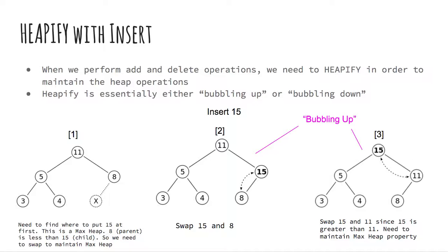Then we compare 15 and 8. We see that 8 the parent is less than 15 the child. So we need to swap to maintain the max heap property. So we swap 15 and 8. We then compare 15 and 11 again. We see that 15 is greater than 11, so we swap again. This process is called bubbling up.